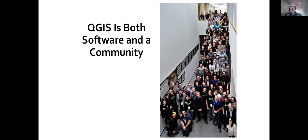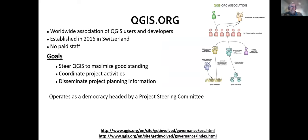QGIS is both software and a community. This is a photograph from the 2019 QGIS conference in A Coruña, Spain. The QGIS community is an integral part of the whole software and is how it continues to evolve. QGIS itself is now established as a nonprofit based in Switzerland. Importantly, it has no paid staff and a fairly small budget. It has a steering committee that operates democratically to coordinate project activities and disseminate information. There are links on the QGIS webpage for the governance documents — it's all publicly available.